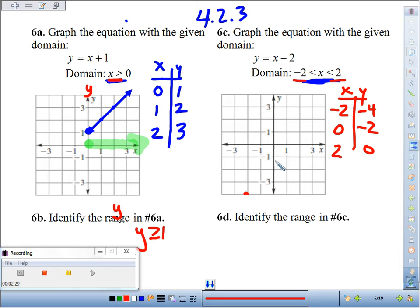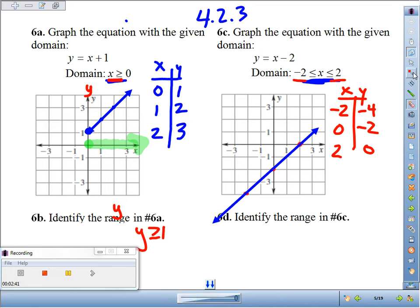Plot those points. Negative 2, negative 4. Zero, negative 2. Two, zero. I know I'm probably okay, because they're in a nice line. But I can't take the liberty of just going like that and saying it goes forever in every direction, because I have to stop it when x is negative 2. So I have to stop it right here.